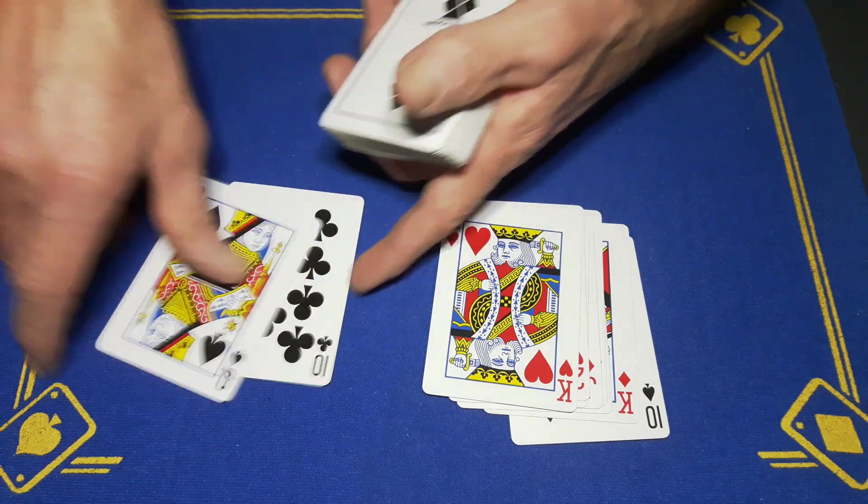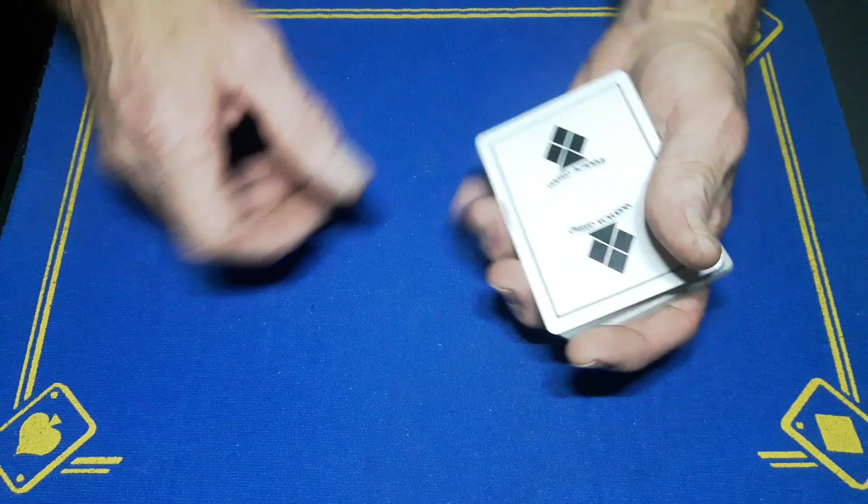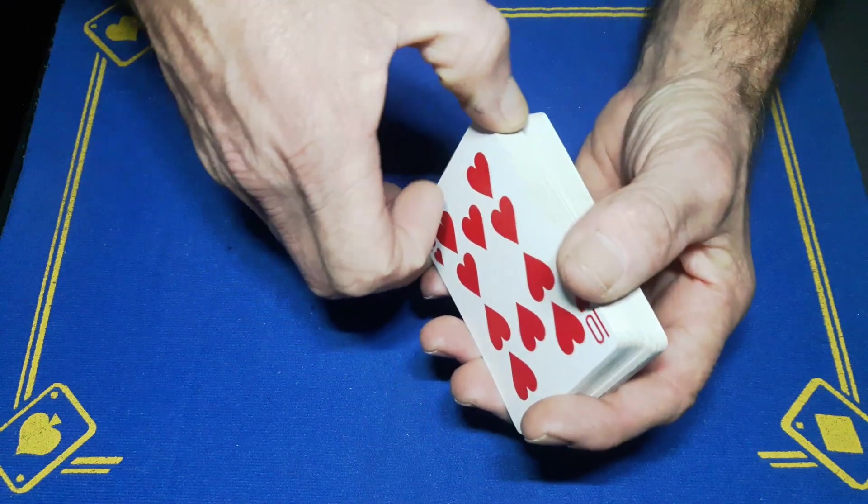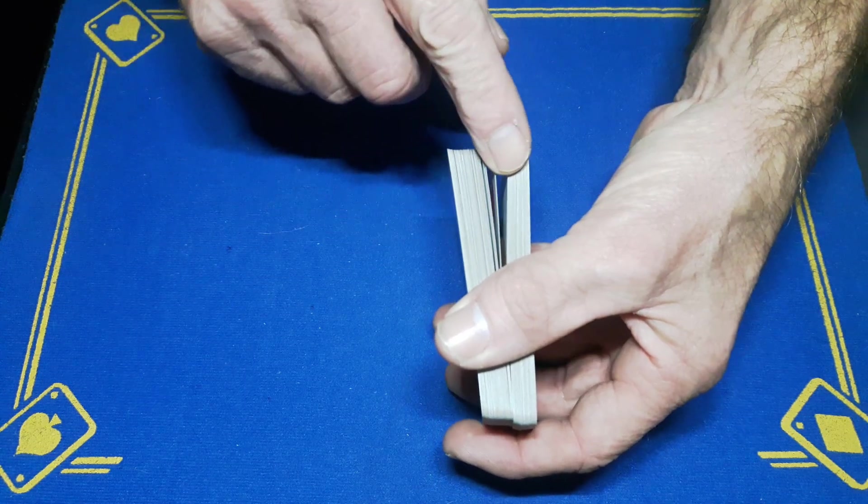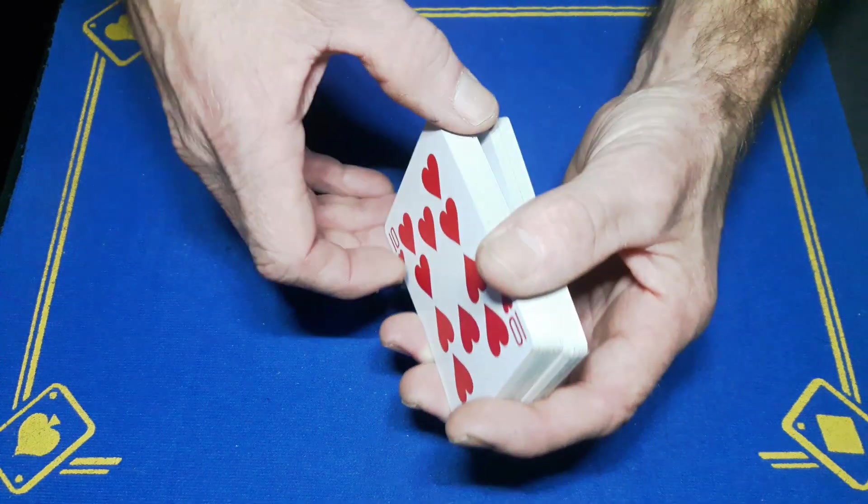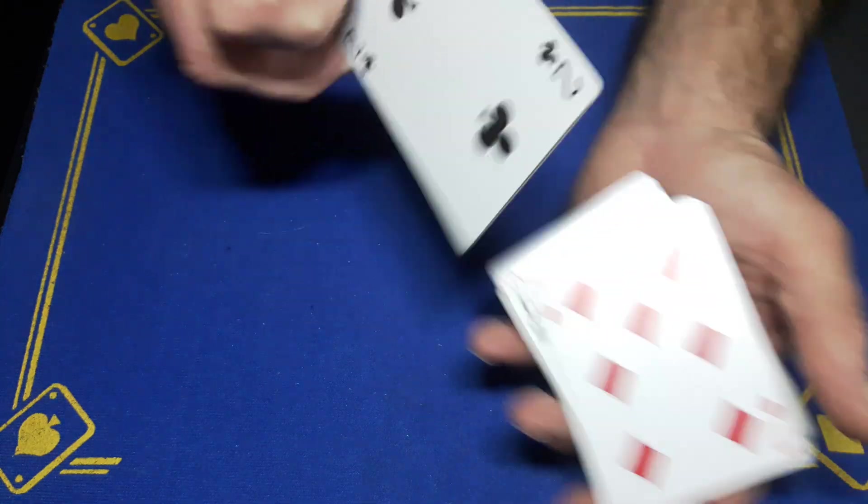So that's nine and ten, these will go on top of the deck. You could start the trick out by doing a Hindu shuffle if you want, which would be picking up a big block of cards, leaving your stack here and just shuffling off the top. To the untrained eye you are shuffling the cards but not the entire packet.